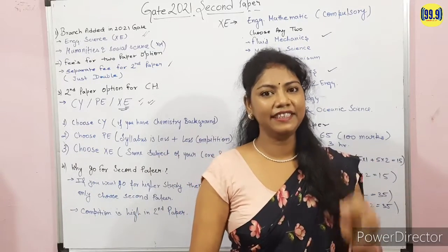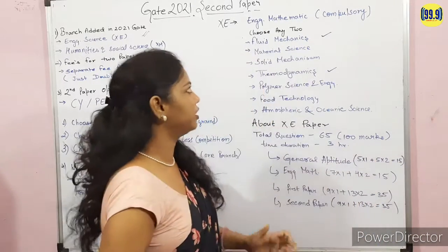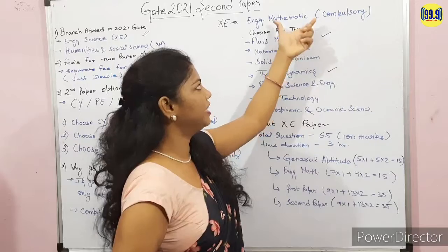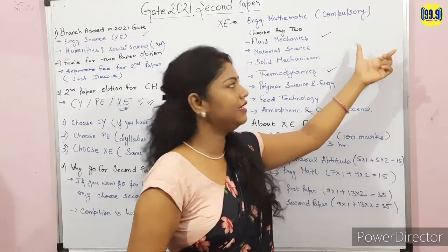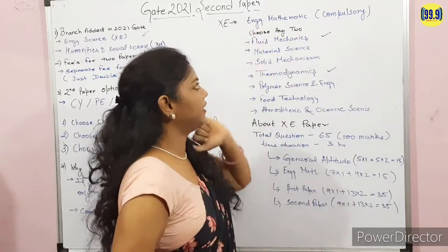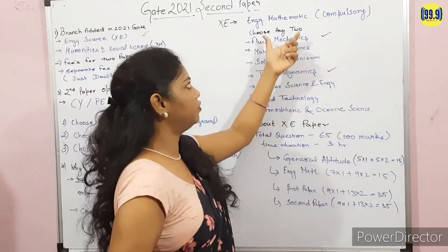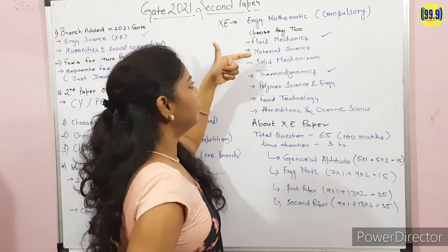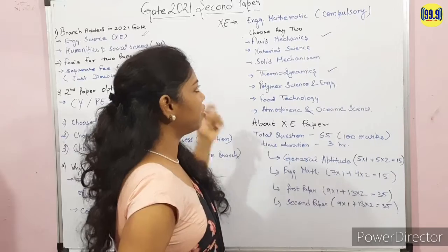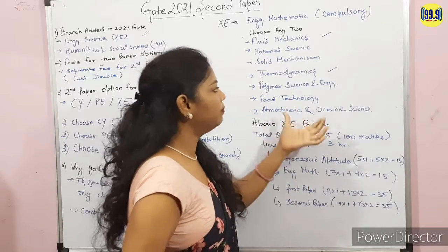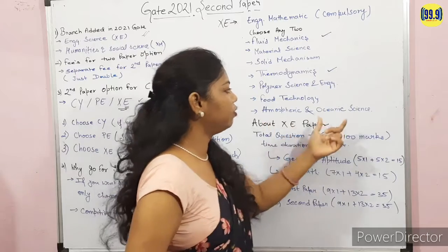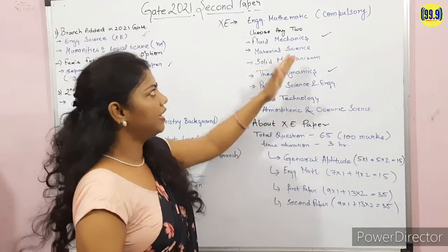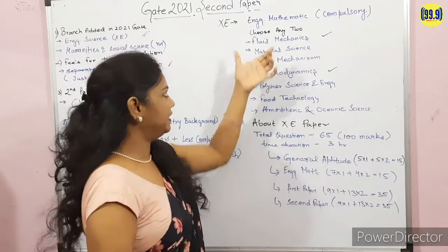Now let's talk about the Engineering Science exam pattern and marks distribution. Engineering Mathematics is a compulsory subject in Engineering Science. The second thing is that you have to choose any two from these seven subjects: fluid mechanics, material science, solid mechanics, thermodynamics, polymer science and engineering, food technology, and atmospheric and oceanic science. You choose any two of these for the XE paper.